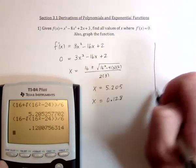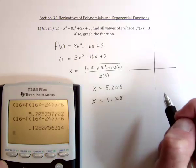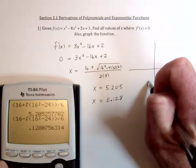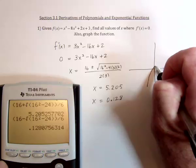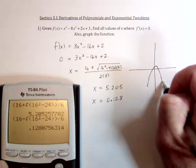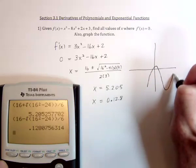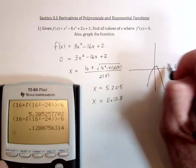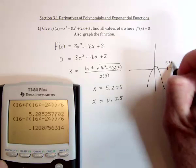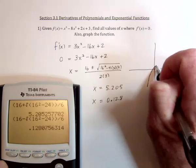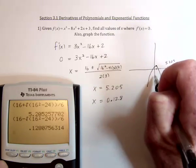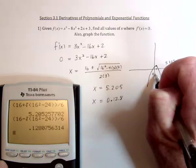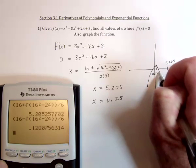So it went like this, and then it went down. This one right here would be the 5.205, and this one right here would be when x equals 0.128.